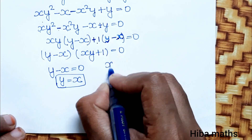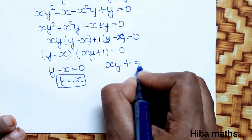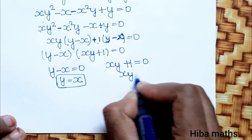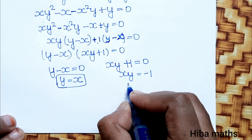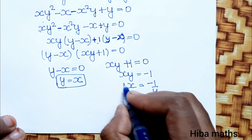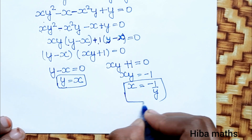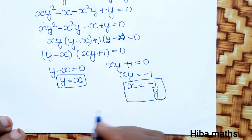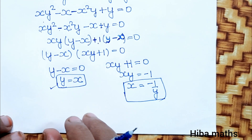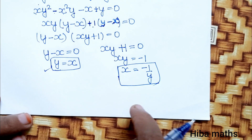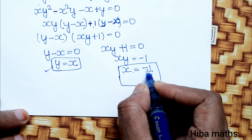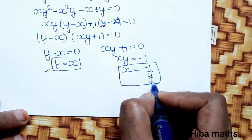The second result comes from xy minus 1 equals zero, giving xy equals 1, wait — xy equals minus 1. Therefore x equals minus 1 divided by y. This is the second result. The first result satisfies the one-to-one condition, but we must check the second result.